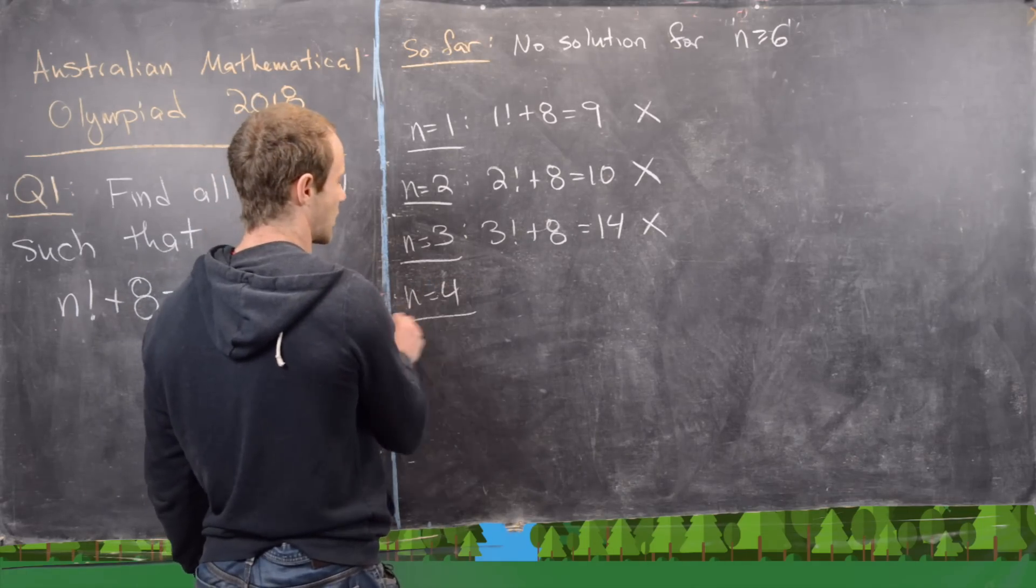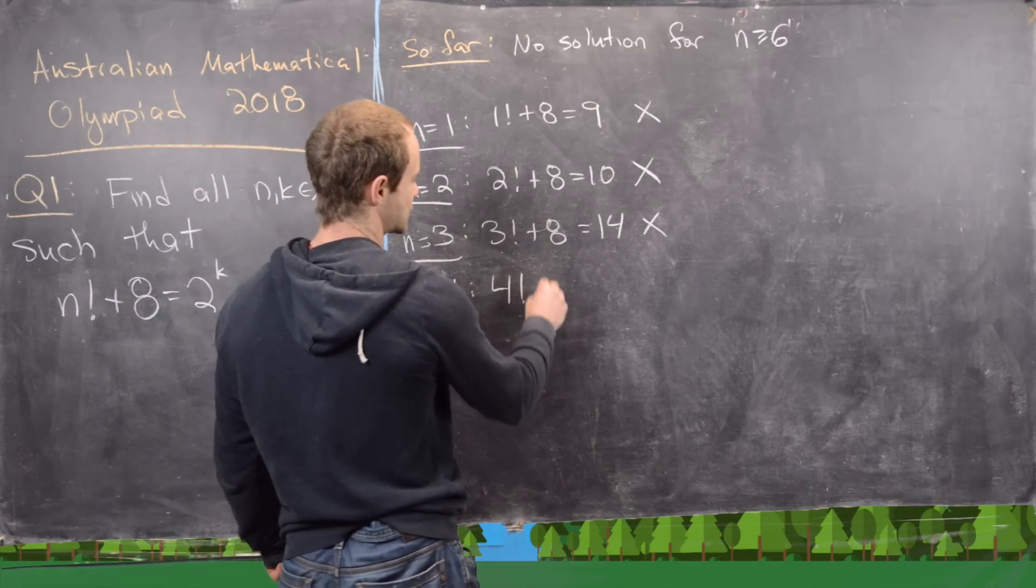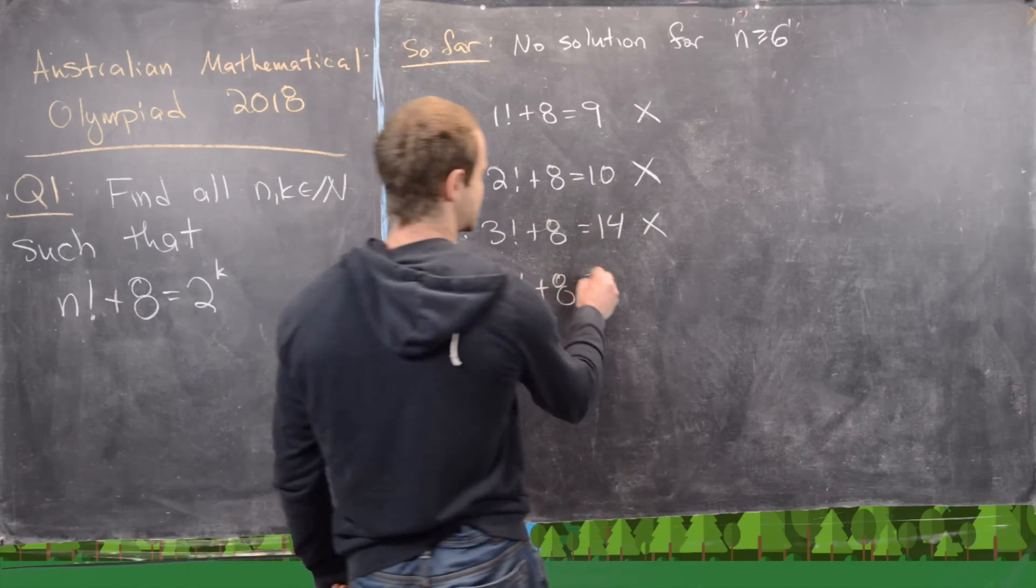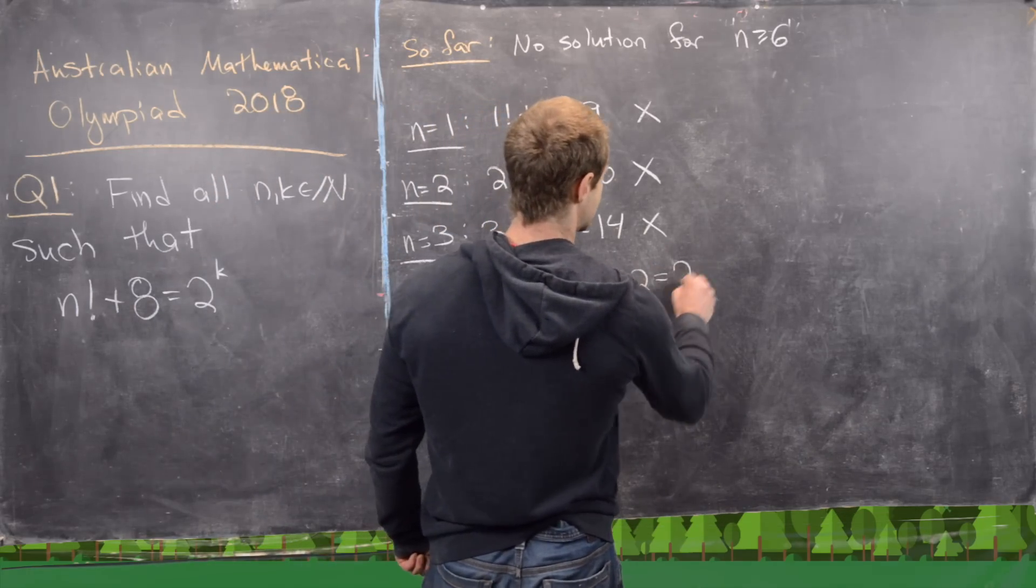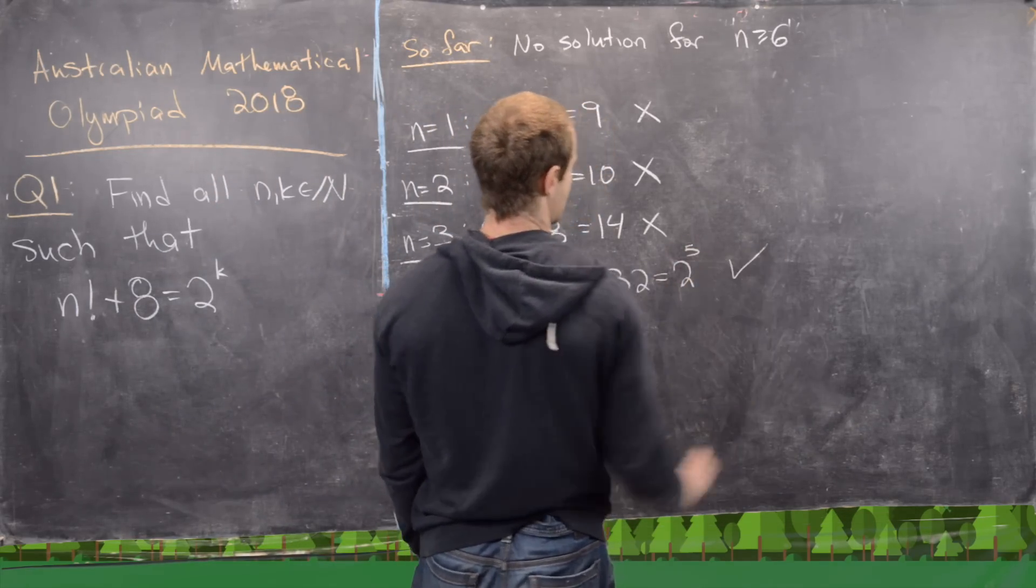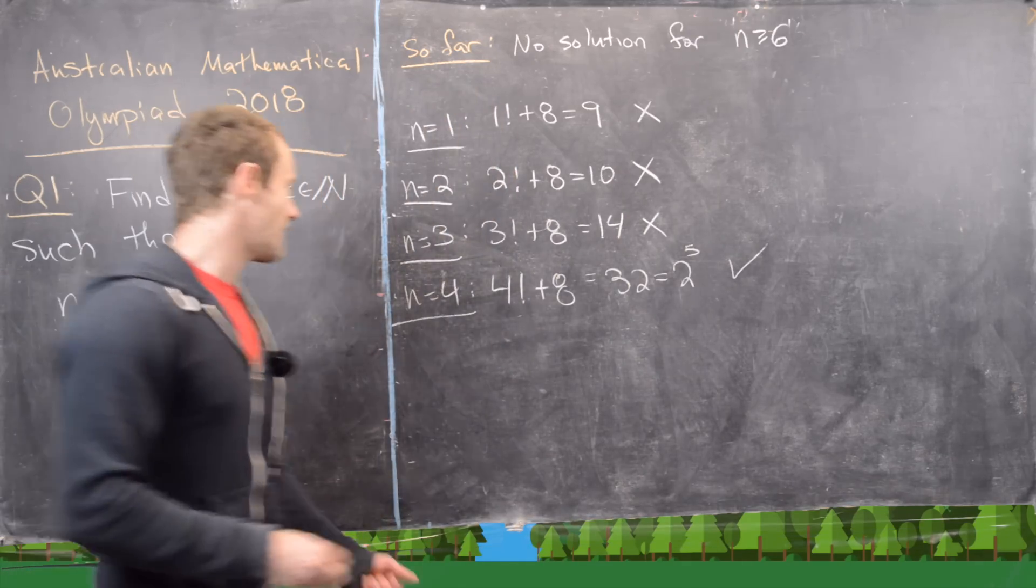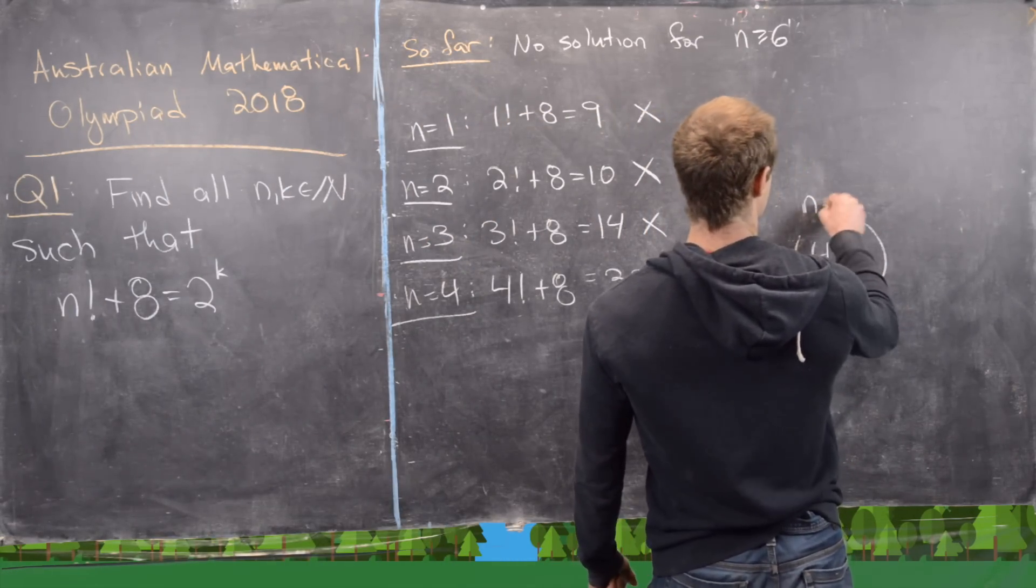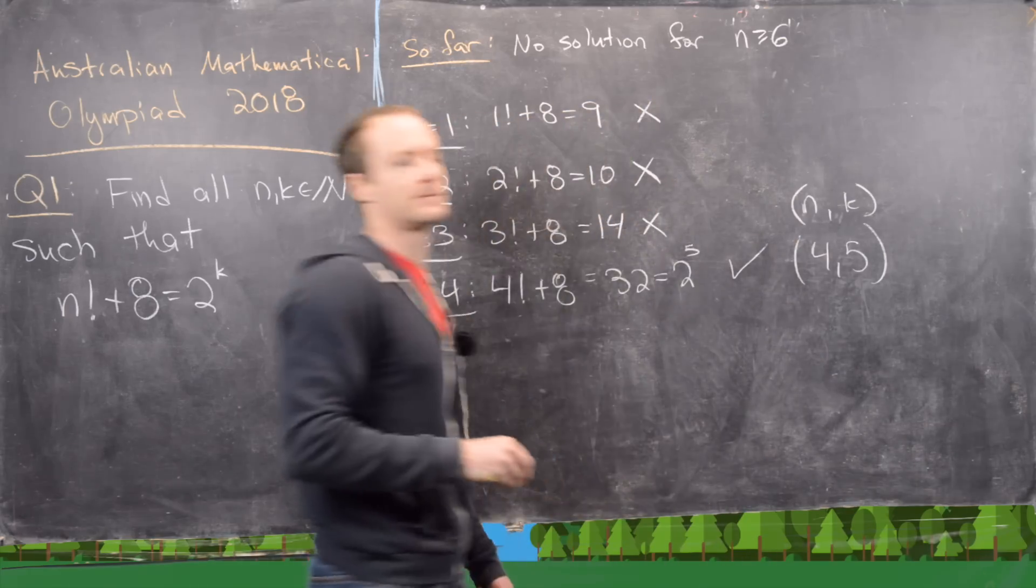And then n equals 4. That's 4 factorial plus 8. 4 factorial is 24 plus 8 is 32. 32 is equal to 2 to the fifth. So that gives us a solution, 4 comma 5, if we're doing n comma k.